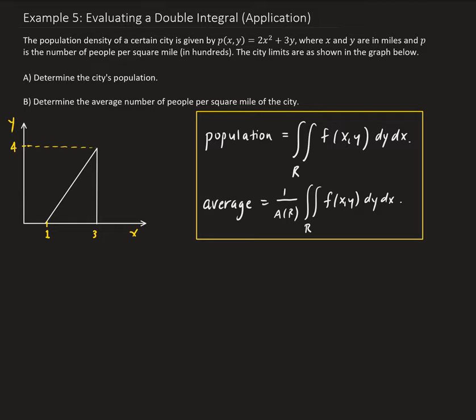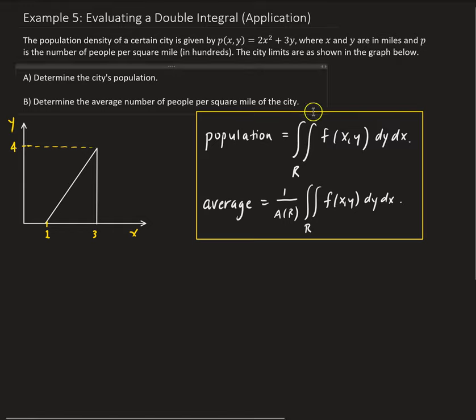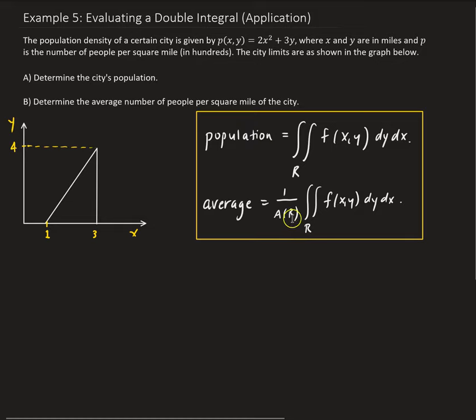The city limits for this population is given in the graph. First, we want to find the city's population using a double integral. Then we're going to take that result and divide by the area of that region — the area of this triangle — and that will give us the average number of people per square mile of that city.